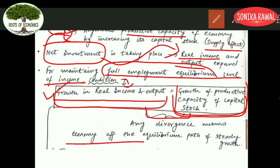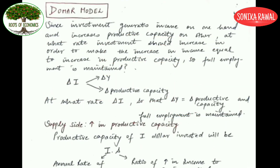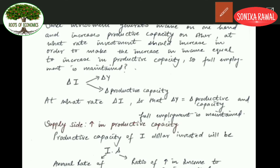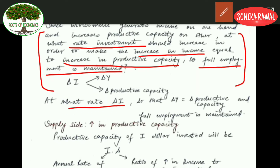According to both Harrod and Domar, this is the condition that must be fulfilled to maintain full employment equilibrium. If there is any divergence, your economy will be put off the equilibrium path of steady growth. Let's start with the Domar model first. Domar begins by acknowledging the dual character of investment — investment generates income on one hand and increases productive capacity on the other — then tries to answer: what shall be the rate of investment where increase in income equals increase in productive capacity, provided full employment is maintained?